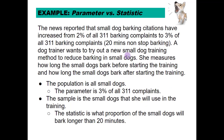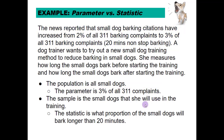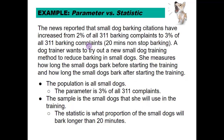In this scenario we can also identify a parameter. The parameter is the 3% of all 311 complaints that are small dog barking complaints, because that was given to us — the news is reporting that that is in fact the truth, whether it is or not we don't really know, but that's what they're reporting. When the trainer starts to measure how long the dogs bark, the statistic will be the percentage or proportion of the small dogs that bark longer than 20 minutes — measuring what's happening in her sample.